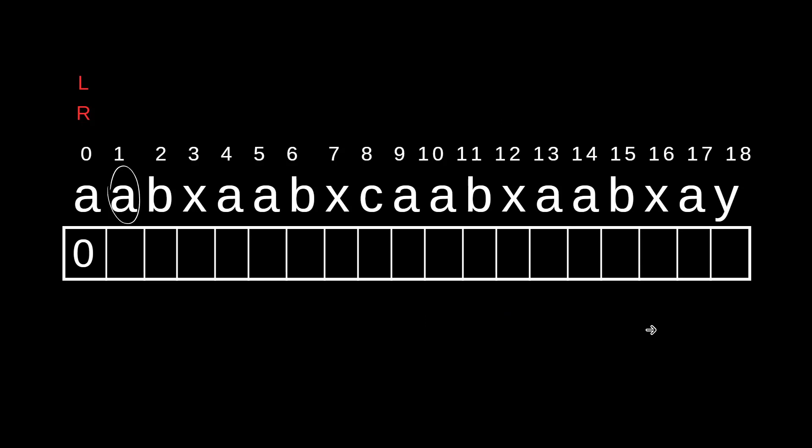We will start from the first index because starting from the zeroth index makes no sense. We have L and R — the Z boundary, where L is the lower and R is the rightmost boundary. If our ith index is greater than R, we just initialize L and R to i, then find if the suffix starting at this value is equal to the prefix.